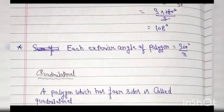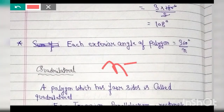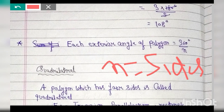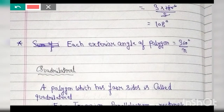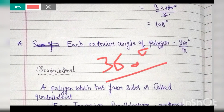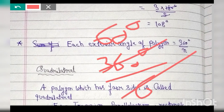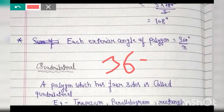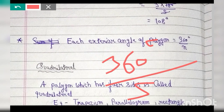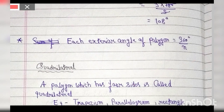The formula for each exterior angle is 360 degrees divided by n, where n is the number of sides. For example, for a hexagon, the exterior angle would be 360 degrees divided by 6. For a pentagon with 5 sides, each exterior angle is 360 degrees divided by 5.